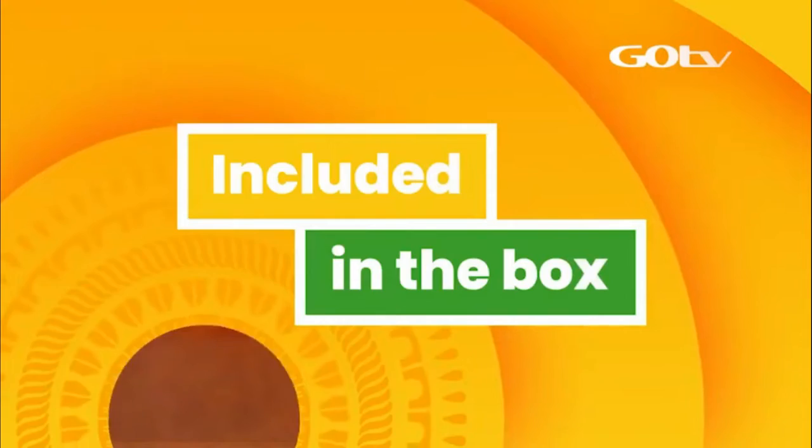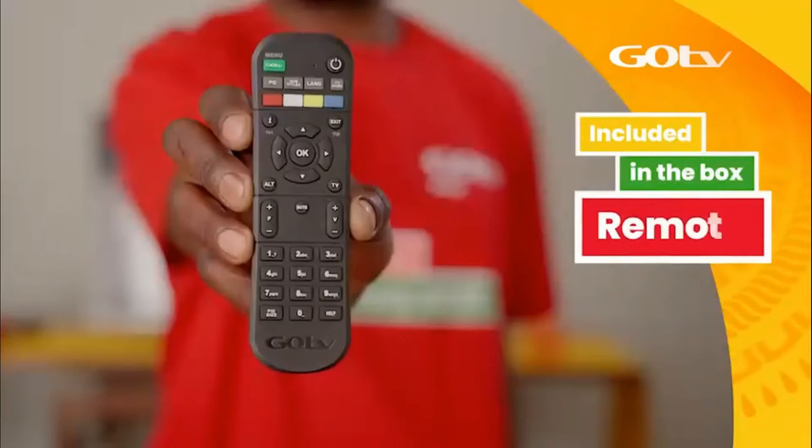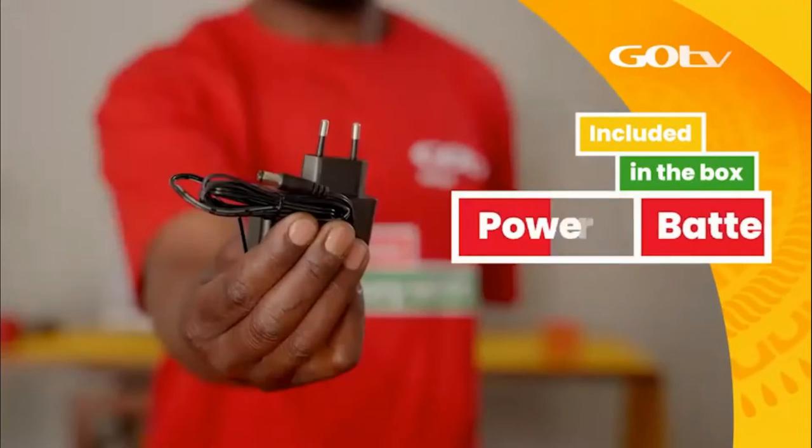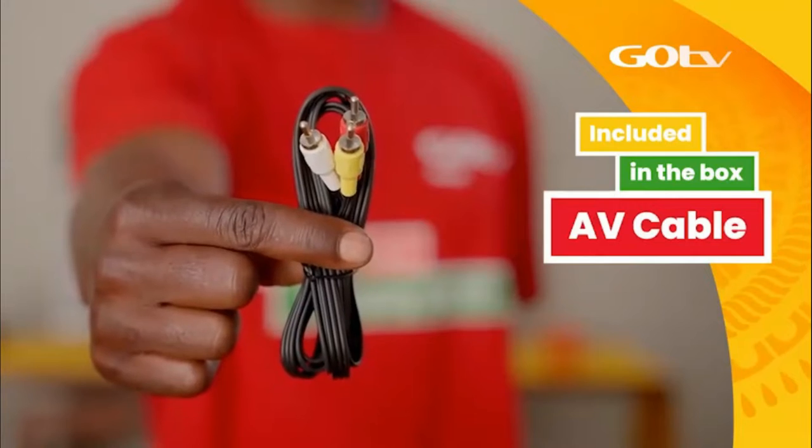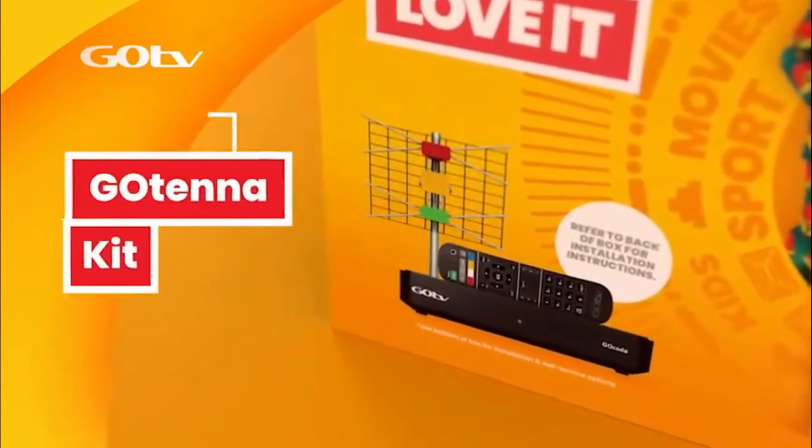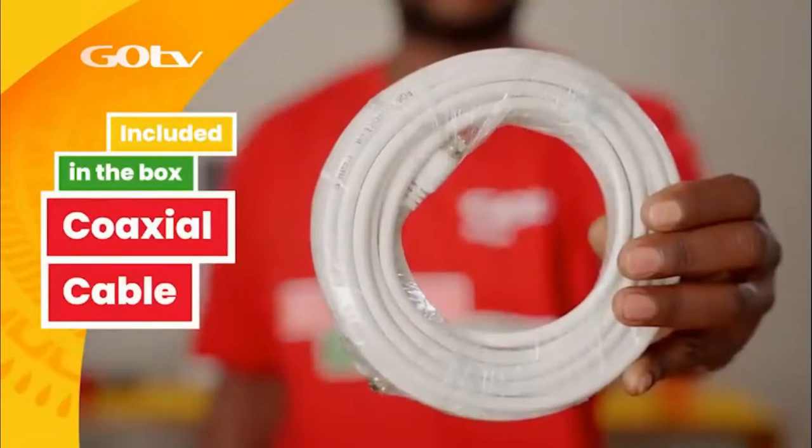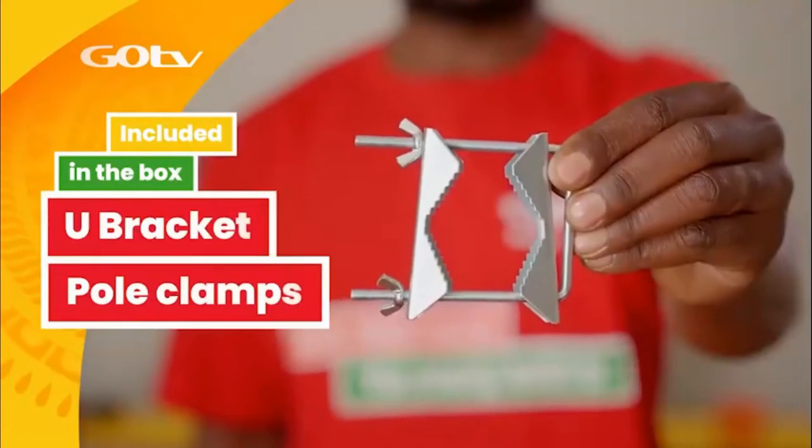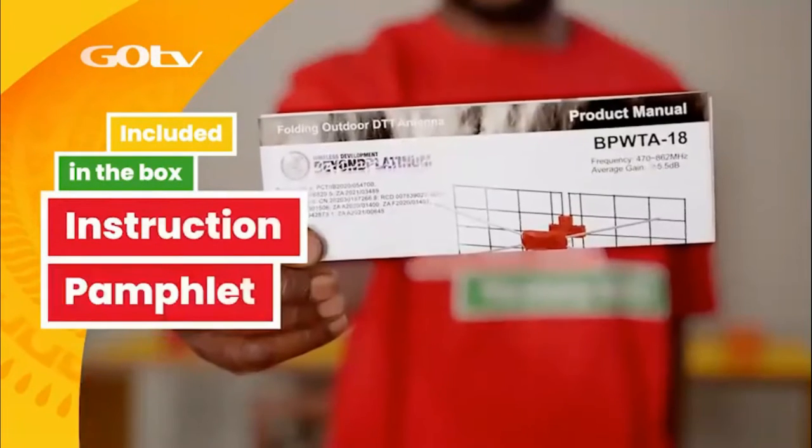In your GoCoda box, you will find your GoCoda, remote, batteries, 12V power supply unit, and an audio-visual cable. If you have also purchased the GoTenner kit, it will also include the GoTenner, a 10-meter coaxial cable, U-bracket with pole clamps, 4 dipoles, and instruction pamphlet.